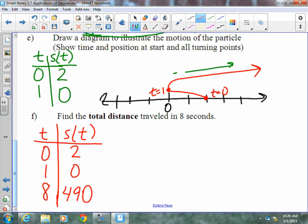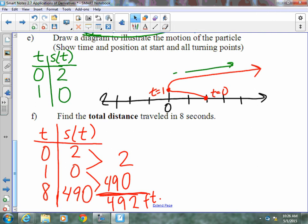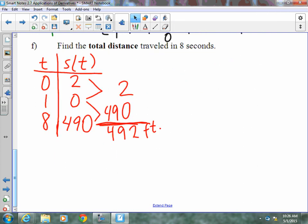From here to here, it traveled 2 total feet. From 0 to 490, it traveled 490 feet, and combined, when we add these up, the total distance is 492 feet. So, 492 feet is our answer.